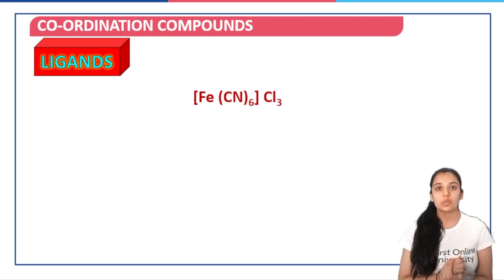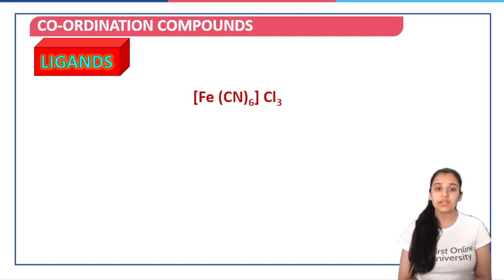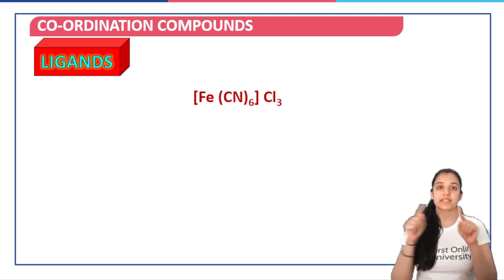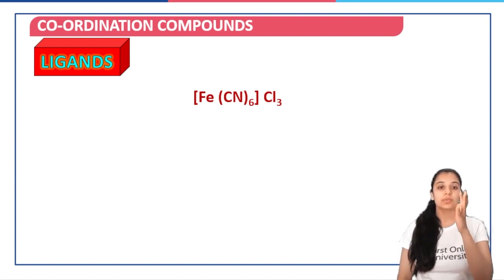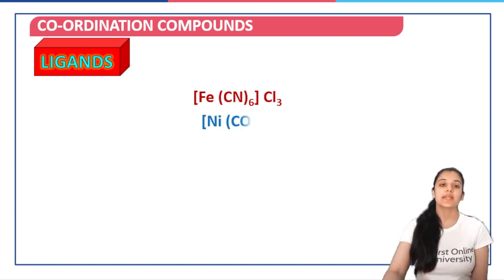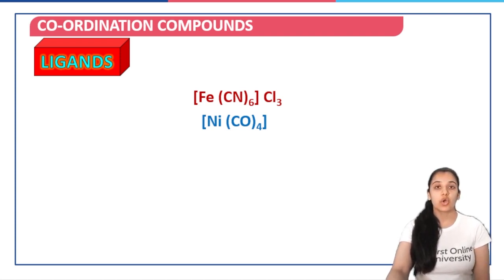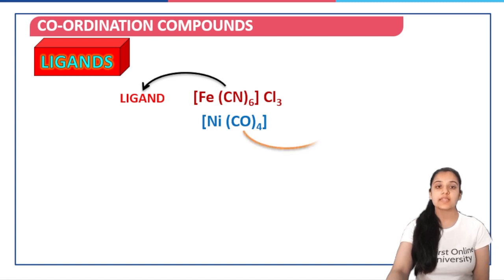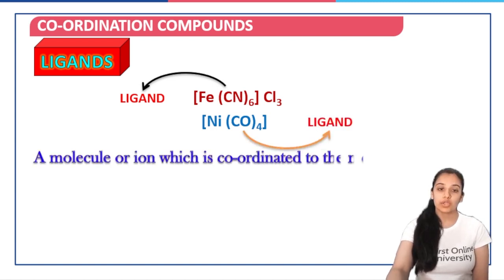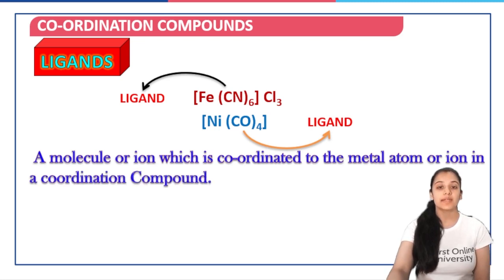I will just repeat it through an example. If we talk about a complex like FeCl3, the ligand is always present inside the coordination sphere, that is the square brackets. Whatever is present within the square brackets apart from the metal ion or metal atom is going to be the ligand. So here, CN- is the ligand. Similarly, in the nickel-carbonyl complex, CO (carbonyl) is a neutral ligand. So a molecule or ion which is coordinated to the metal atom or metal ion in a coordination compound is called a ligand.